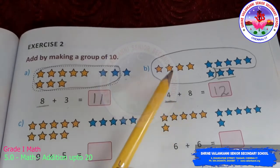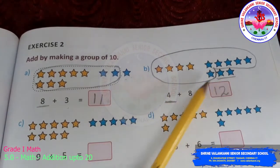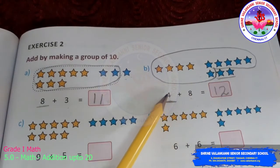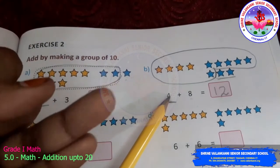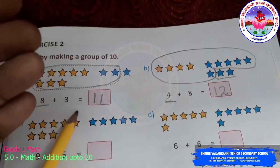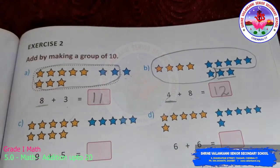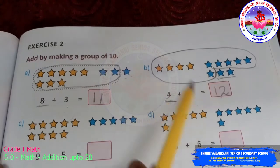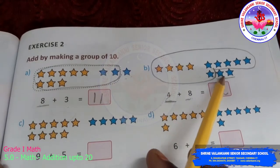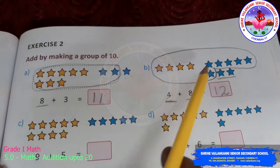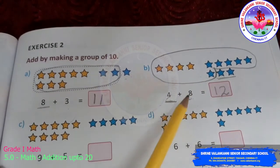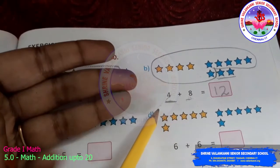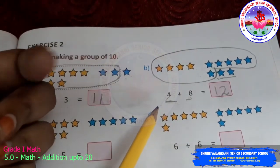See, 4 plus 8. 4 stars and 8 stars. So, how many more stars will I need to make 4 a 10? After 4, 5, 6, 7, 8, 9, 10. So, I need 6 stars. So, I take 6 stars from this 8 and keep the remaining 2 and add 10 plus 2. You get 12.